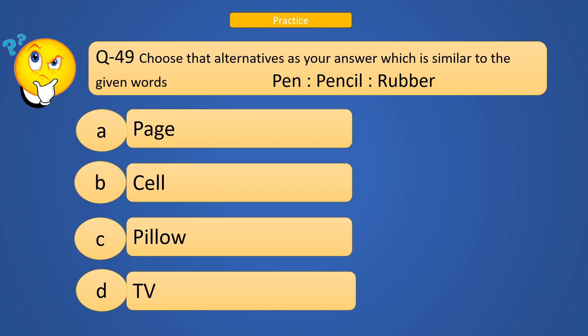Next question. Choose that alternative as your answer which is similar to the given words Pen : Pencil : Rubber. Which one is the correct answer? Options are Page, Cell, Pillow, TV.